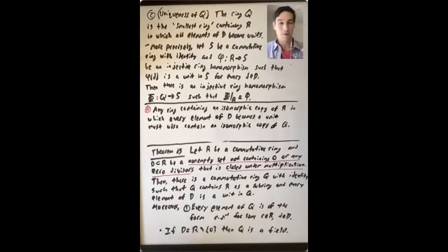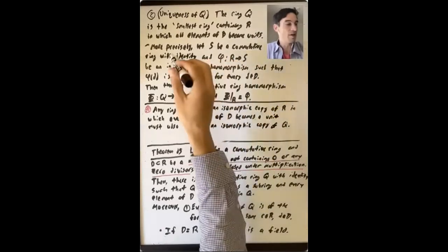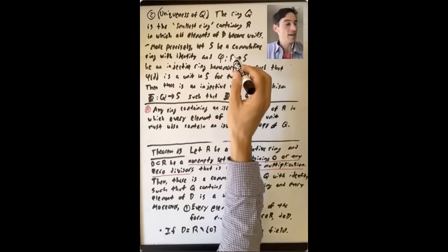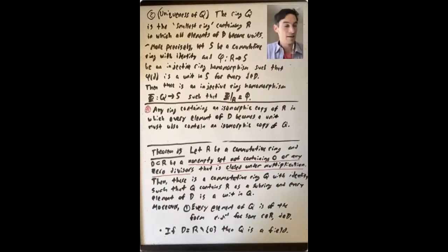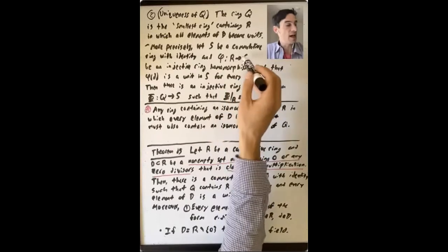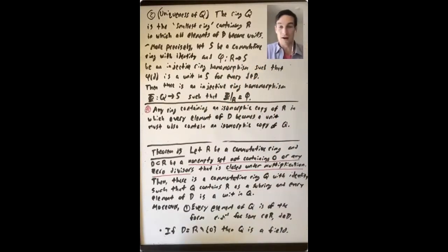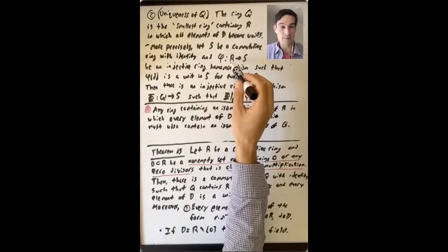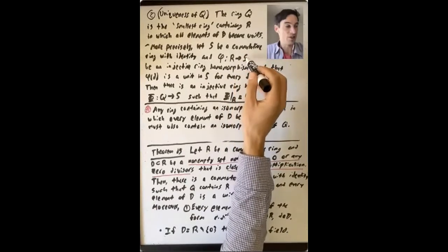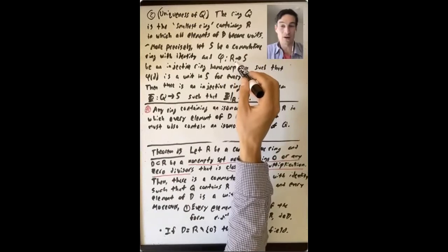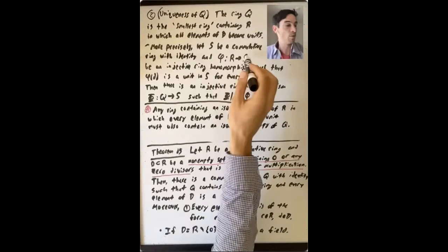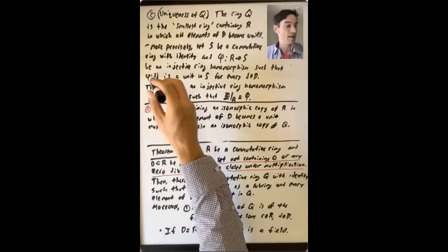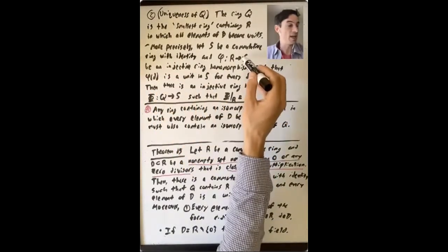More precisely, what does 'smallest ring' mean? Let's say that S is a commutative ring with identity and phi is an injective ring homomorphism from R to S such that phi of d is a unit in S for every d in D. By the first isomorphism theorem, if this is injective, the image is a subring of S isomorphic to R, and the image of everything in D is a unit in S.